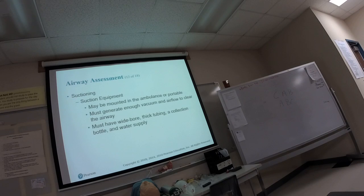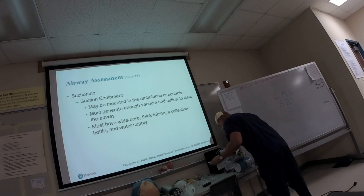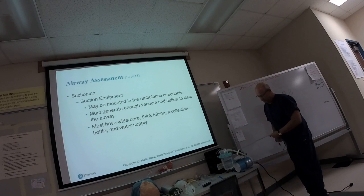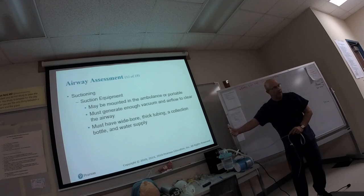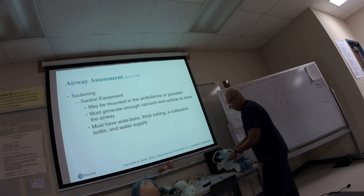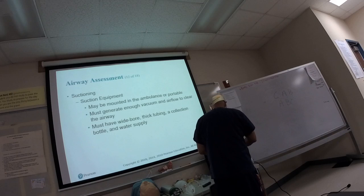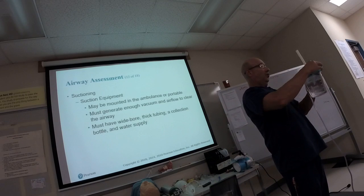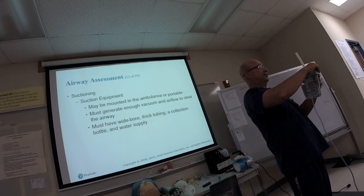We have the suction container. If you're troubleshooting, any open holes have to be covered — suction requires a vacuum, so everything must be sealed. The containers are disposable; once they fill up, you put them in the red bag and dispose of them — but keep them long enough to show the contents to the hospital if you suctioned the patient. Then there's the suction tubing. If you have really thick mucus clogging the suction tip, you can suction directly with the tubing itself — it gives a little extra diameter.